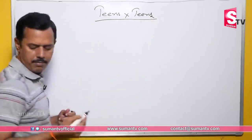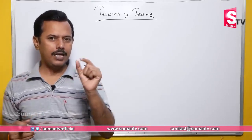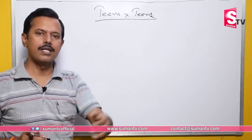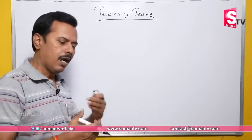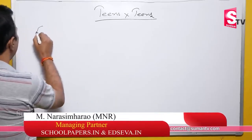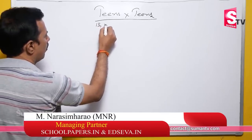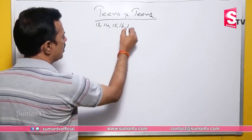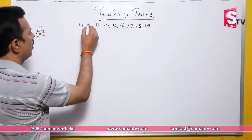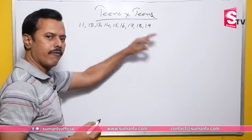Teens into Teens — 13, 14, 15, 16, 17, 18, 19 — these are the teens. 11 and 12 are not included. So we work from 13 to 19. Let's take some examples and see how this works. The teen center numbers are 13, 14, 15, 16, 17, 18, 19.